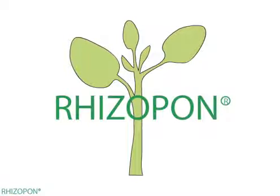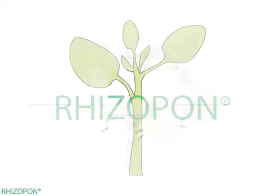All plant cuttings need rooting regulators, called auxins, to make roots.